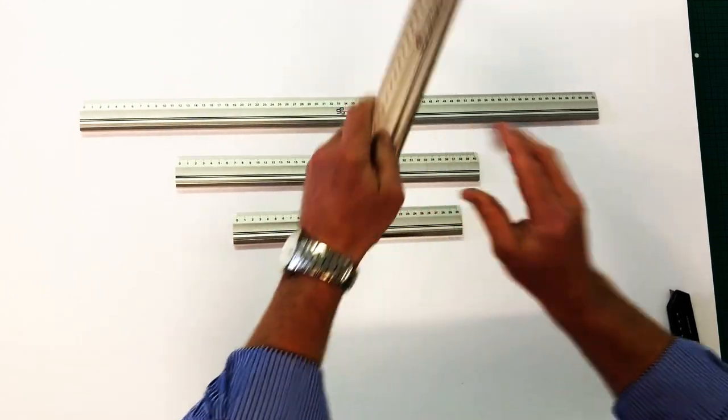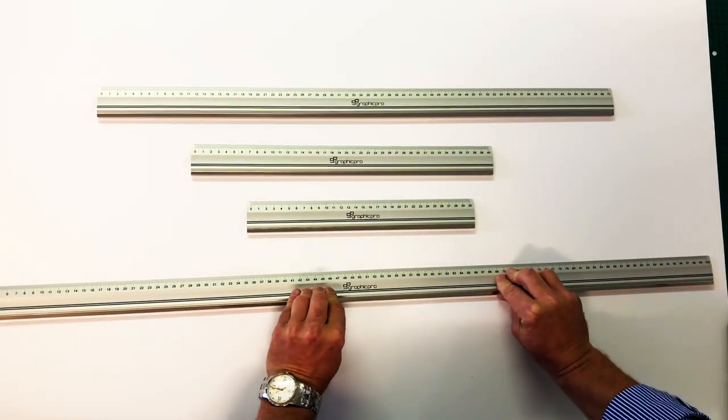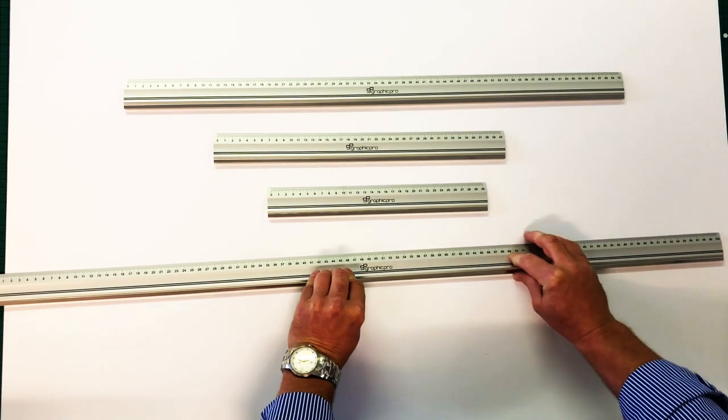So when you're actually placing it on the piece of paper you're wanting to cut, they can't move. They're very rigid.